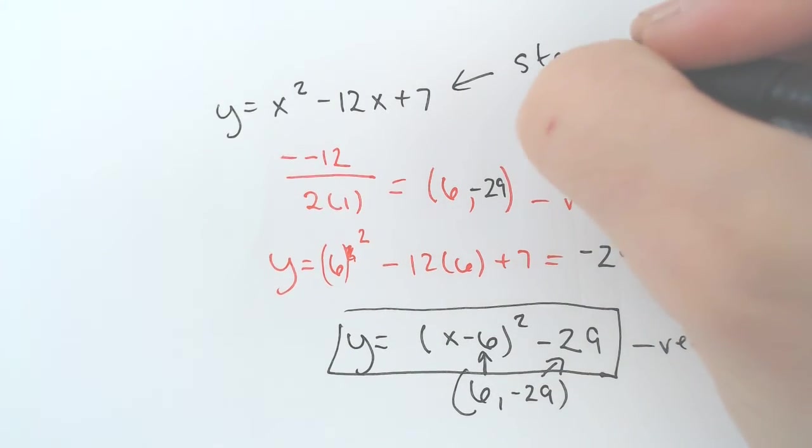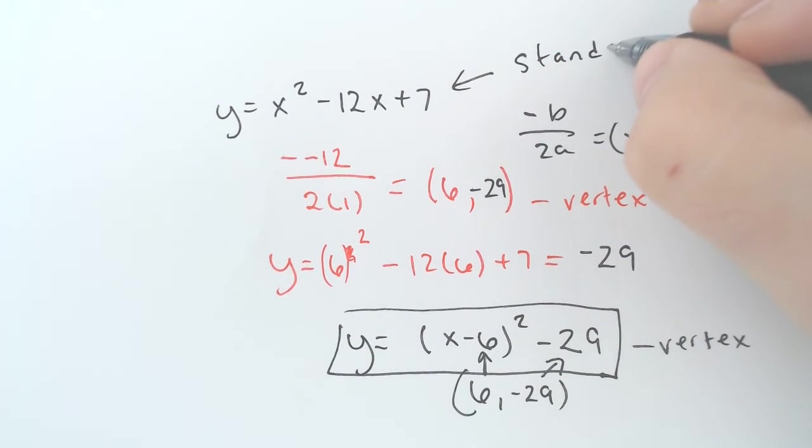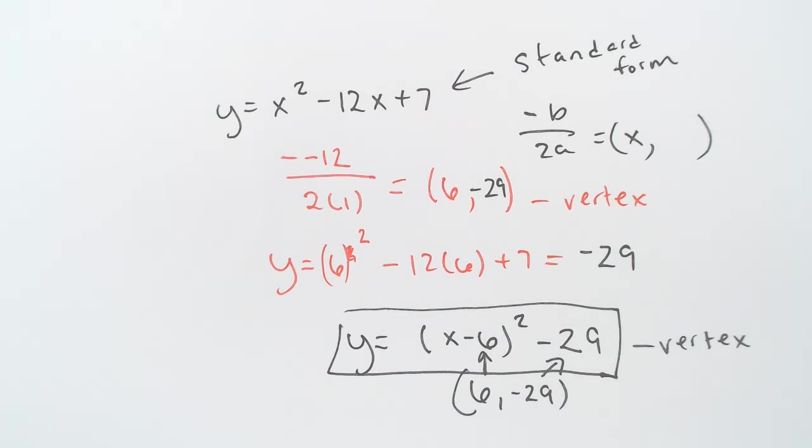This original one is known as standard form of the parabola. And then there was factored form, which is when you write the factors. Moving right along, we are near the halfway point.